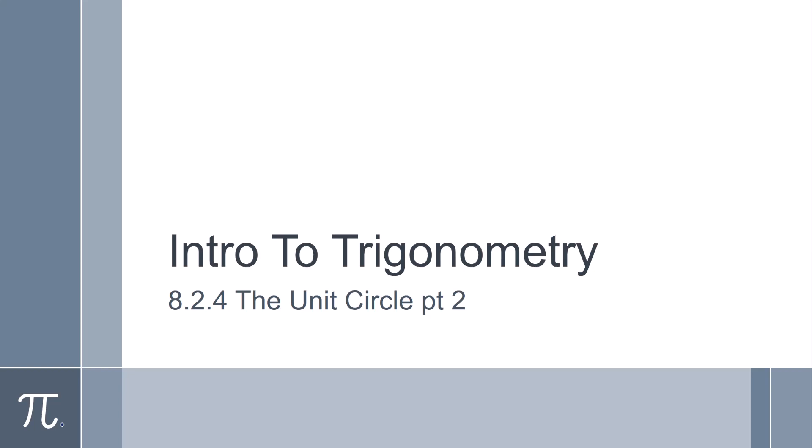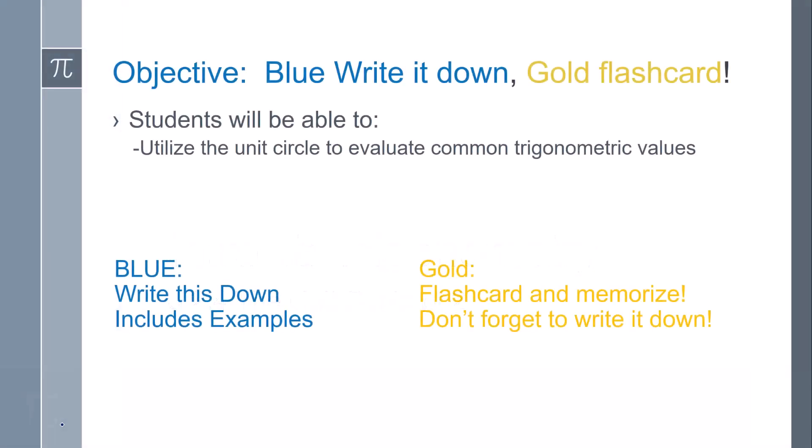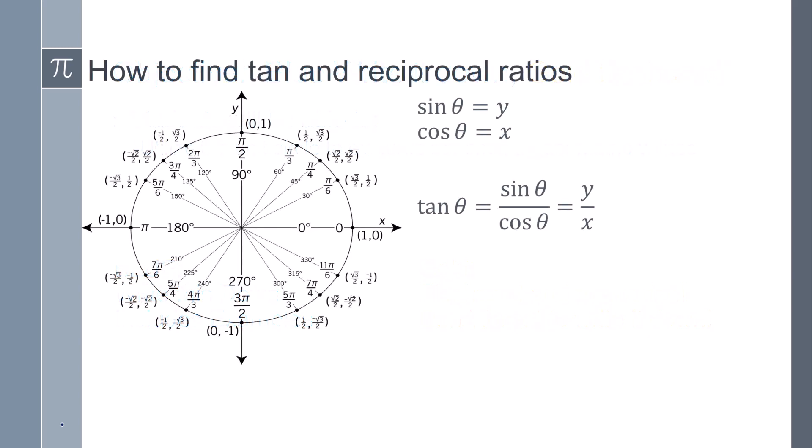This is section 824. We're going to take a look at the unit circle again, and this time we're going to be taking a look at tangent and the reciprocal ratios.